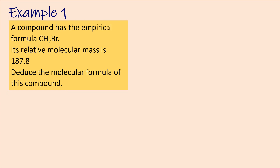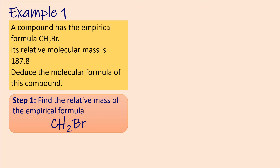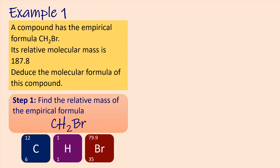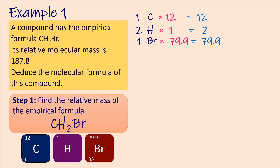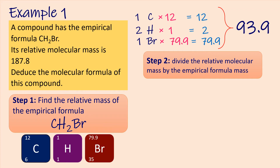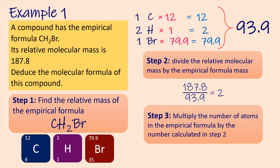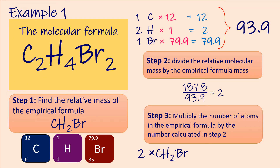This problem is solved in three simple steps. Step 1: find the relative mass of the empirical formula. In CH2Br we have one atom of carbon of mass 12, two atoms of hydrogen of mass 1, and one atom of bromine of mass 79.9. The empirical formula mass is 12 plus 2 times 1 plus 79.9, which equals 93.9. Step 2: divide the relative molecular mass by the empirical formula mass — 187.8 divided by 93.9 equals 2. Step 3: multiply the number of atoms in the empirical formula by 2. CH2Br times 2 gives C2H4Br2, and this is the molecular formula.